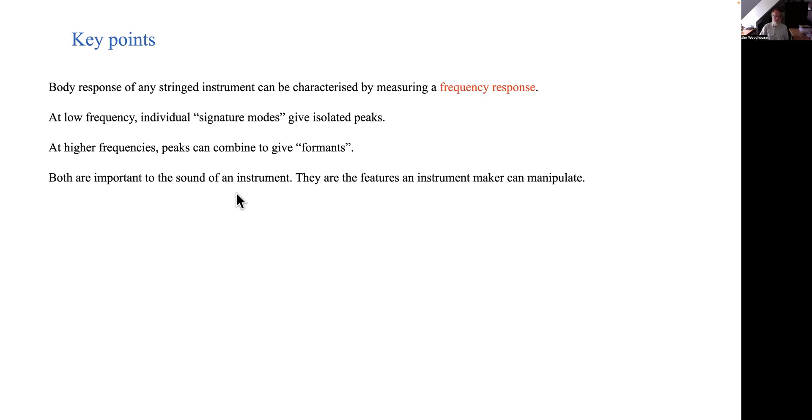Both those things are important to the sound of an instrument: the low frequency signature modes and the higher frequency formants. And the important thing to a maker is that these are the features that an instrument maker can manipulate. So what do they depend on? Well the signature modes depend on what kind of instrument it is. They'll be different for a violin from a guitar. For example we saw modes of violins and guitars earlier.